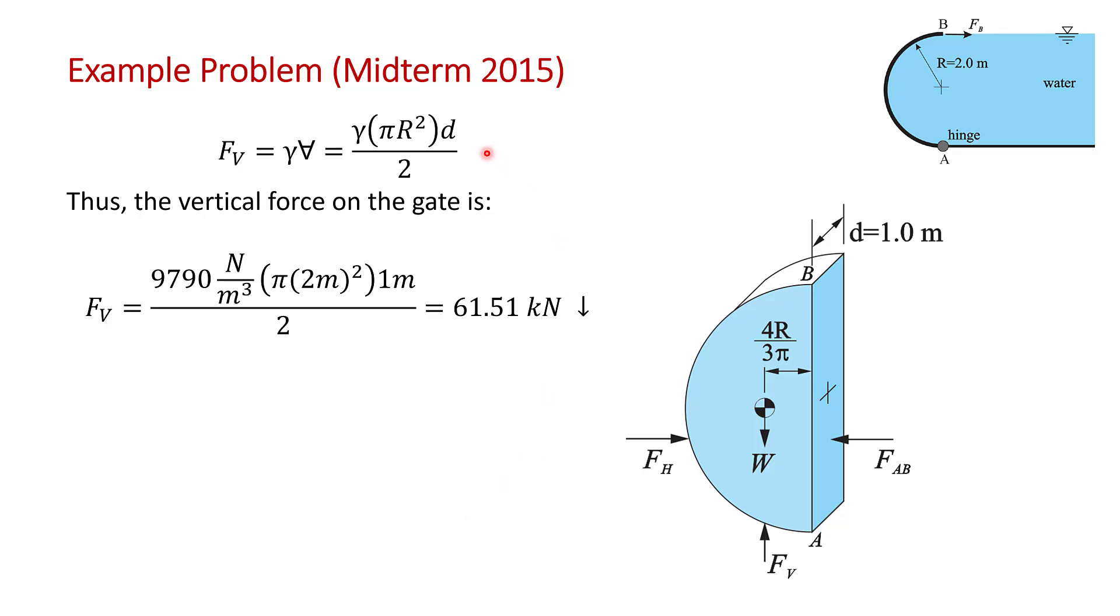That's just a matter of substituting in the values. The gamma of water, you're given in the problem that the density is 998 times g gives 9790 newtons per cubic meter. That's water at 20 degrees C. The radius of this gate is 2 meters. So pi times 2 squared divided by 2, and then that's the unit depth and you get 61.51 kilonewtons.